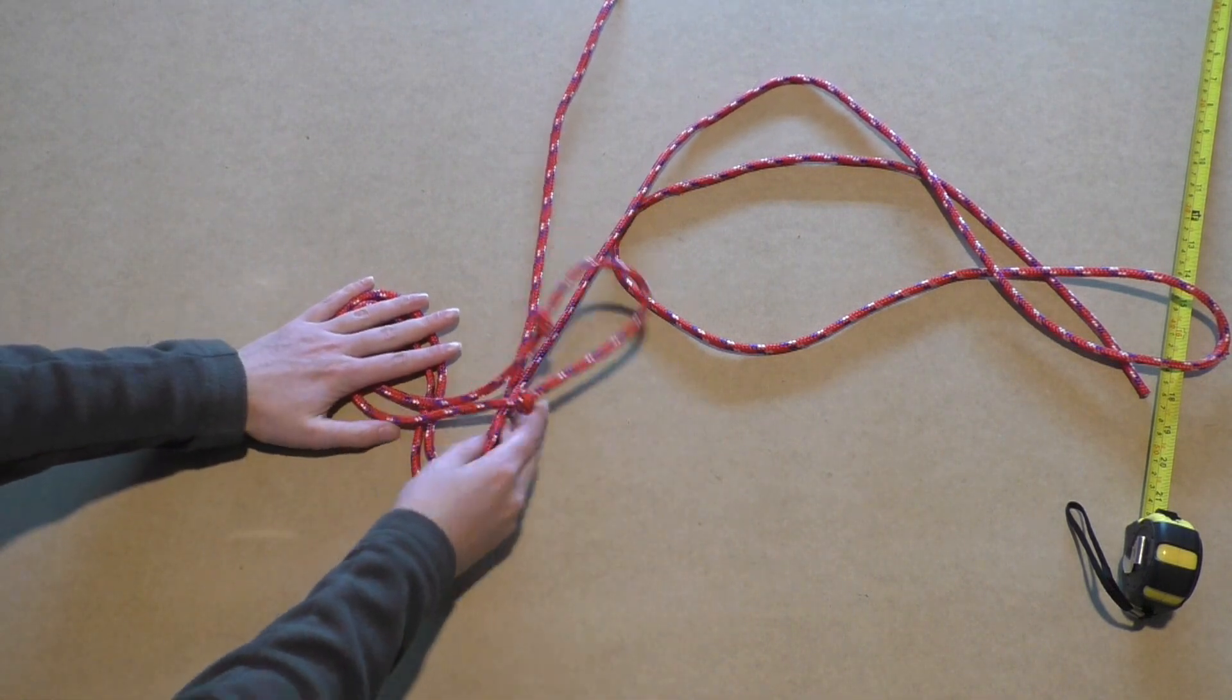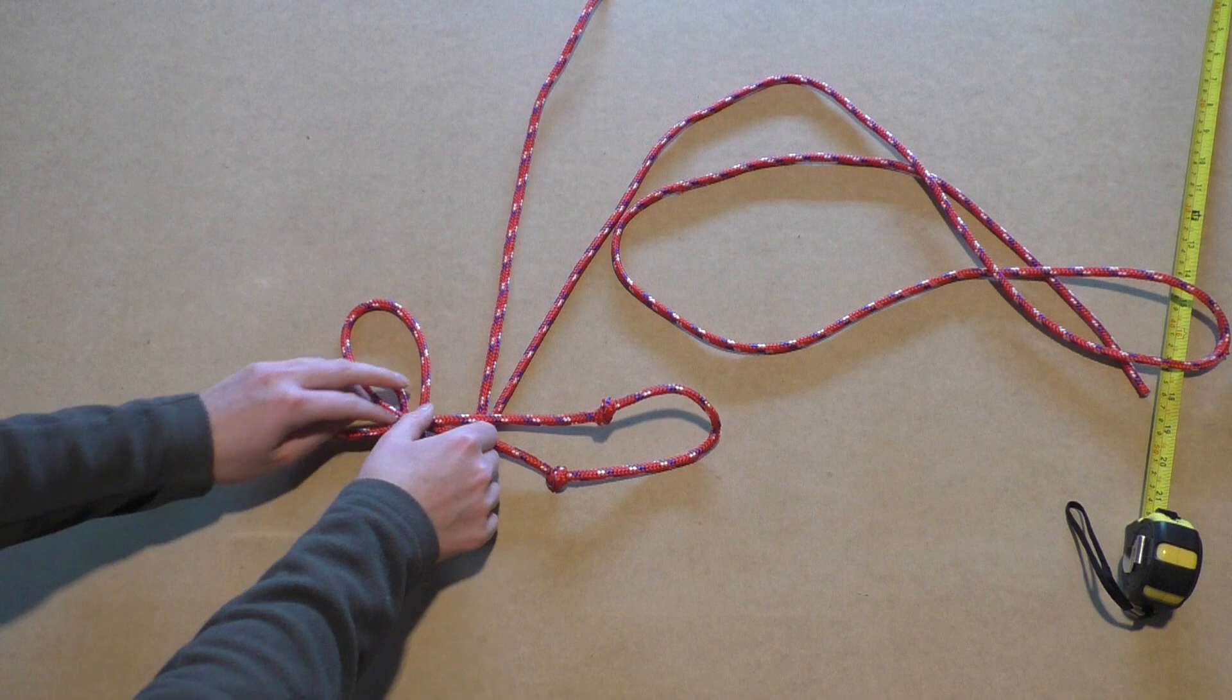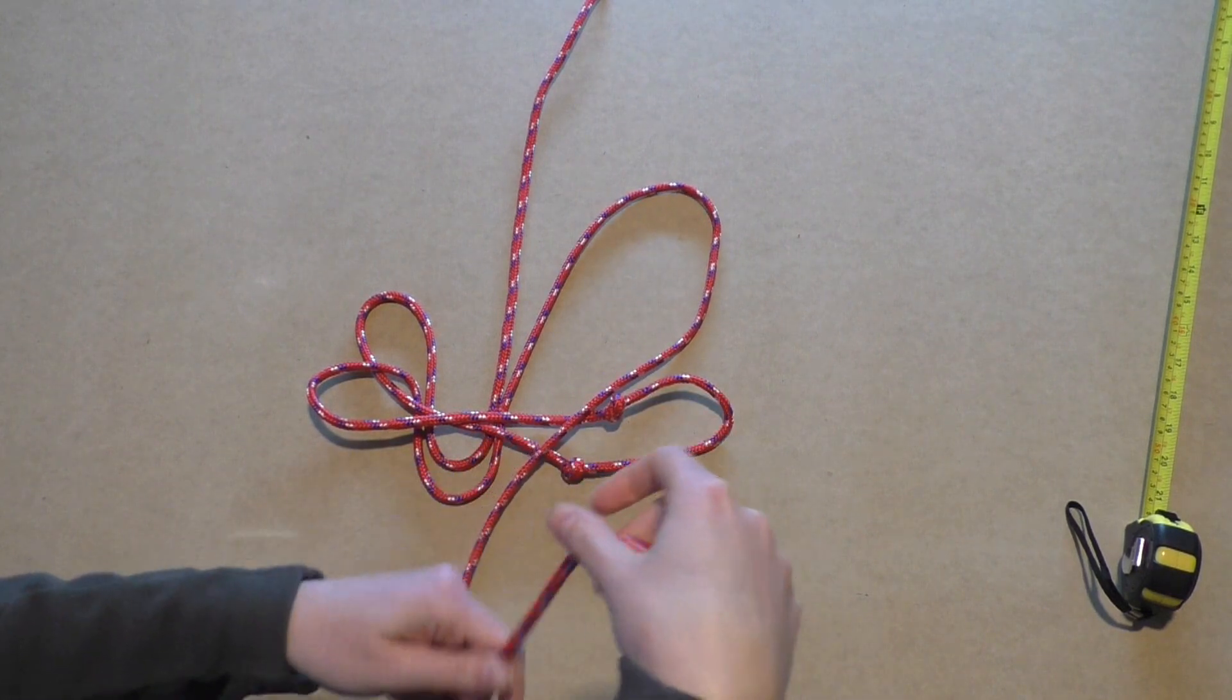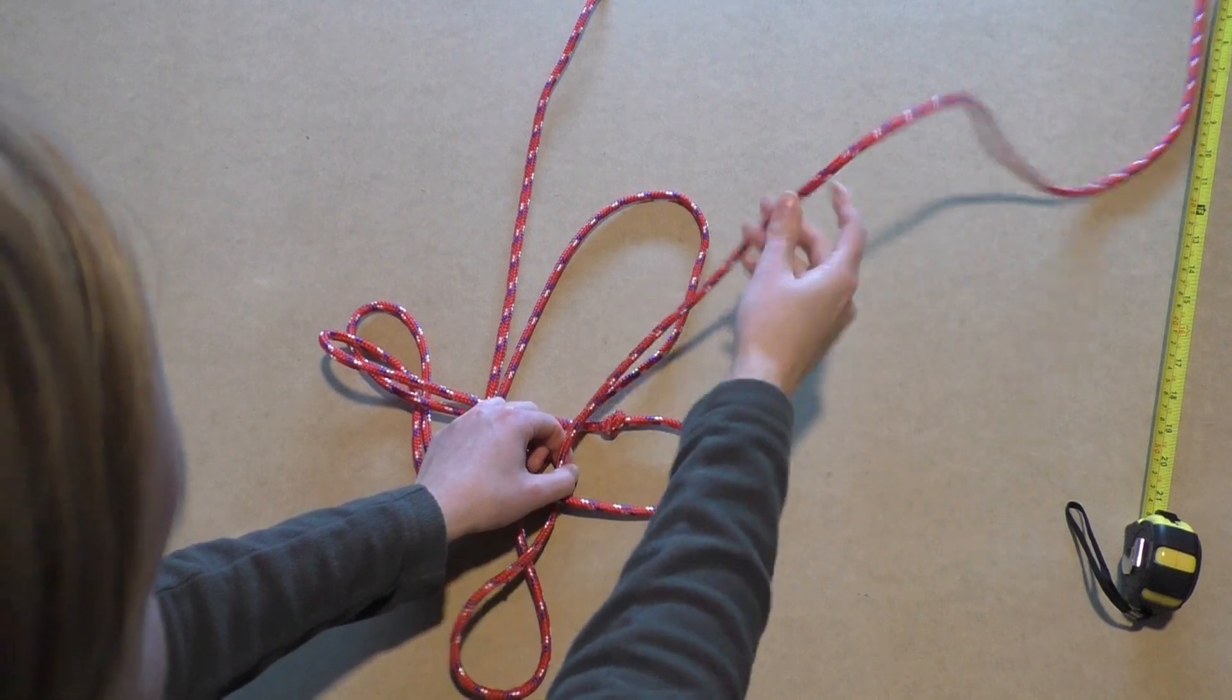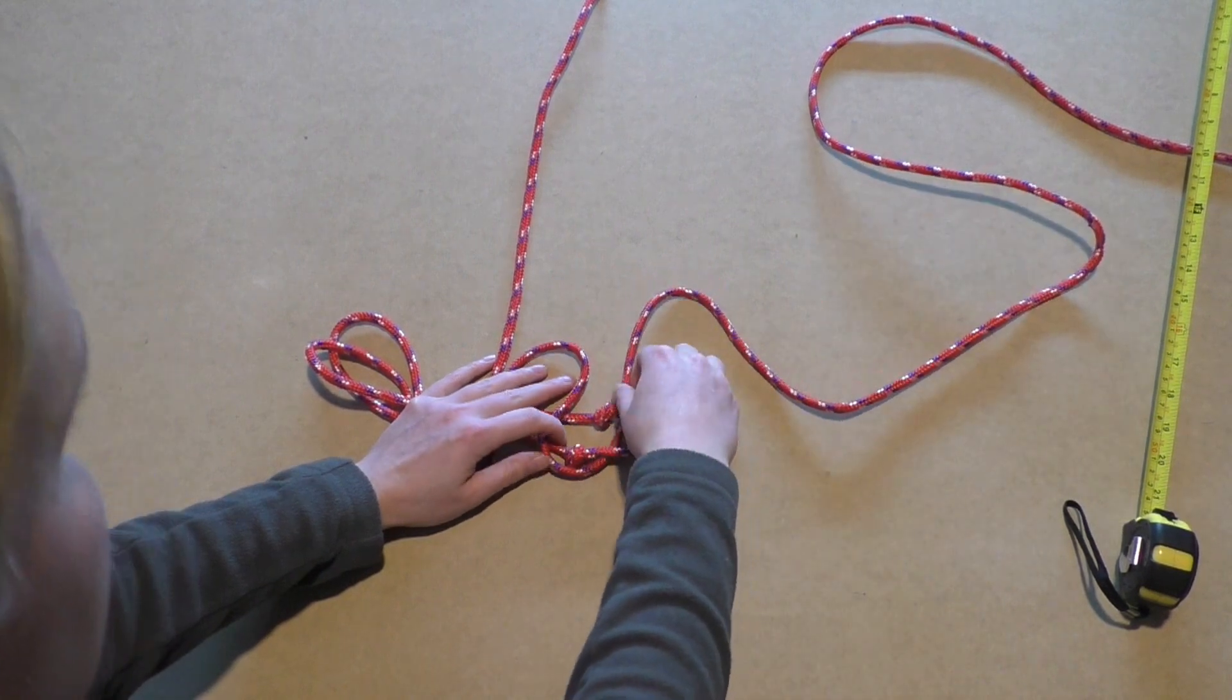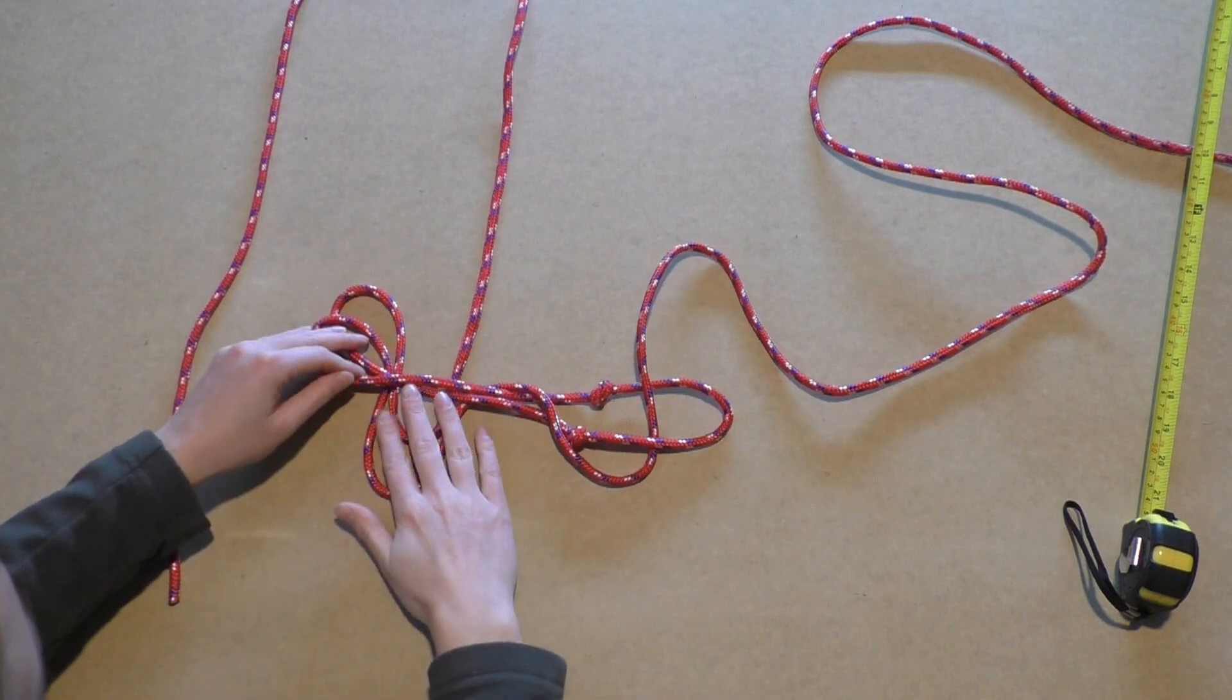Take the knot end and lay it over the S-turn to the right. Take the inner loop and lay it over the outer loop like this. Take the shorter end of the rope and lay it downwards over the knot end. Take it back up by leading it underneath the lower rope and over the upper rope. Make sure you keep a clear overview of where your ropes actually are.